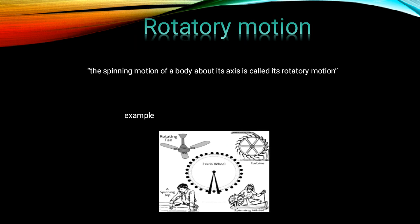Rotatory motion: the spinning motion of a body about its axis is called rotatory motion. The motion of Earth about its geographic axis that causes day and night is rotatory motion. Also, a ceiling fan is an example of rotatory motion.